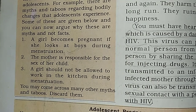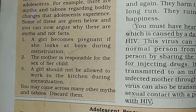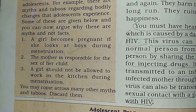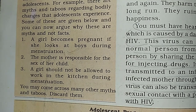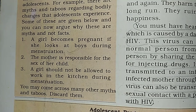Now we will talk about some myths. One myth is that a girl should not look at a boy during menstruation. Another myth is that the mother is responsible for the sex of her child — no, the sex of the child depends completely on the father. A third myth is that a girl should not be allowed to work in the kitchen during menstruation; menstruation is just a natural process and a girl can do everything normally. There are also myths about what can or cannot cause pregnancy, which are not true.